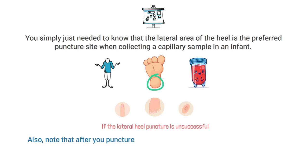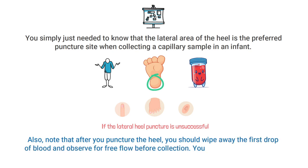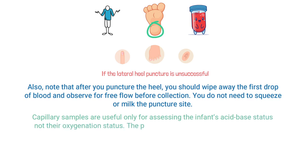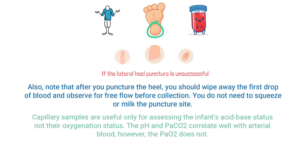After you puncture the heel, wipe away the first drop of blood and observe for free flow before collection — you do not need to squeeze or milk the puncture site. Importantly, capillary samples are useful only for assessing the infant's acid-base status, not their oxygenation status. The pH and PaCO2 correlate well with arterial blood; however, the PaO2 does not. So the acid-base parameters correlate well, but the oxygenation parameters do not.